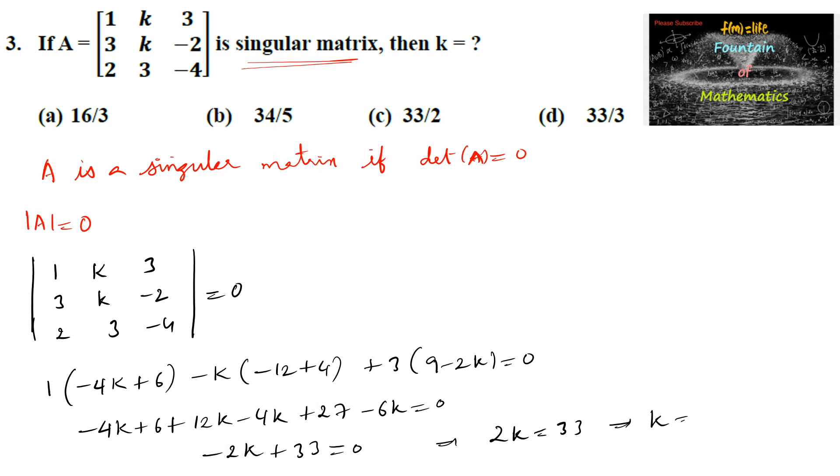So k value is 33/2. To make this matrix a singular matrix, the value of k must be equal to 33/2, which is option c, 33/2.